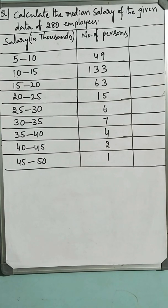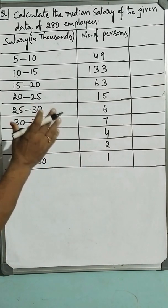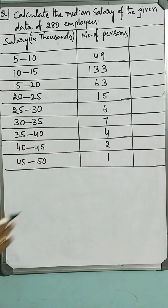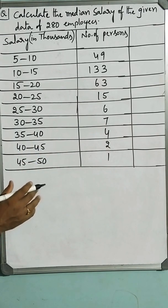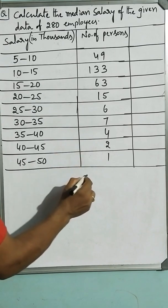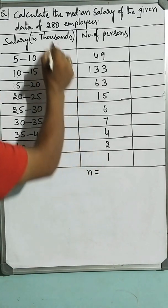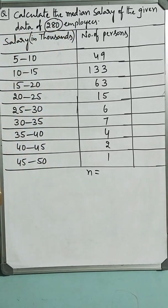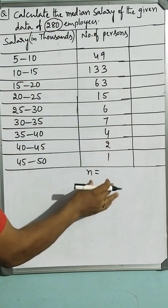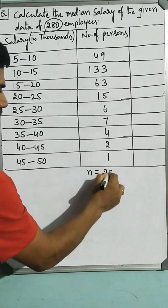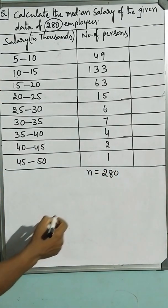Here in median, you have to find the middlemost value. See for that, you have to calculate n by 2 value, that is sum of the frequencies. As already you were given there are 280 employees, you need not accumulate this one. This automatically becomes 280.